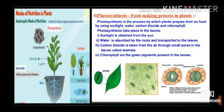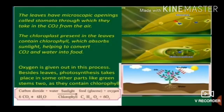Photosynthesis takes place in the leaves. Sunlight is obtained from the sun. Water is absorbed by the roots and transported to the leaves. Carbon dioxide is taken from the air through small pores in the leaves called stomata. Chlorophyll is the green pigment present in the leaves. The leaves have microscopic openings called stomata through which they take in CO₂. The chloroplasts in the leaves contain chlorophyll, which absorbs sunlight, helping to convert CO₂ and water into food.